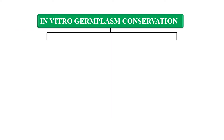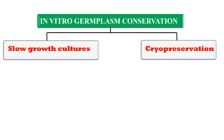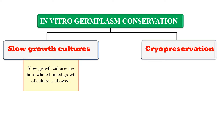In vitro germplasm conservation can be done by slow growth rate cultures and cryopreservation. In slow growth rate culture, we slow down the growth of the culture so that it can be preserved for a longer period. For this kind of conservation, we generally preserve the germplasm in freezers under low temperature, but they cannot be preserved for a very long period.